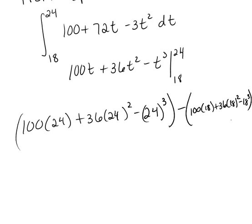And if you type that into your calculator, you should get 1,680. You get 1,680, but that's thousands of gallons, so it's 1,680,000 gallons of water from 6 PM to midnight.